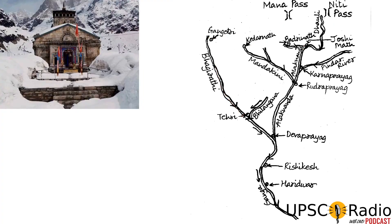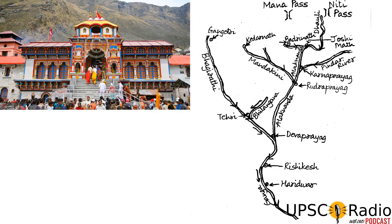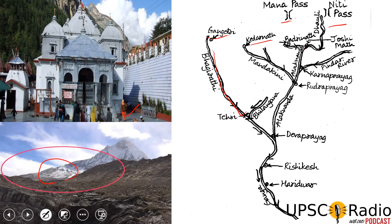Next is Kedarinath — this is Kedarinath. Then Alakananda River. These three are important Prelims points: Gangotri gives rise to the Bhagirathi River, Kedarinath gives the Mandakini, and the Alakananda River originates near Badrinath.